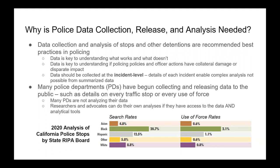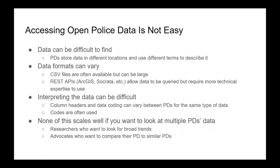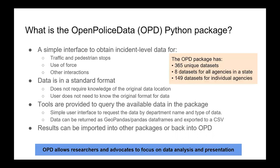Many communities are now open-sourcing their police data at the incident level, but there are difficulties. The data can be hard to find because it's managed at the community level, data formats vary — it could be ArcGIS or even spreadsheets — and column names like ethnicity can be labeled differently across communities. None of this scales well if you're a researcher wanting to make comparisons across communities.